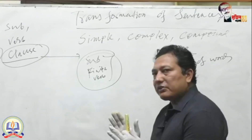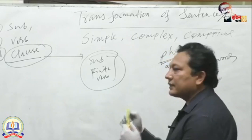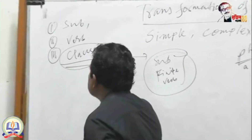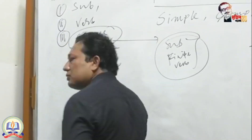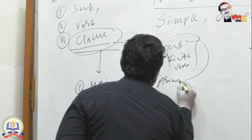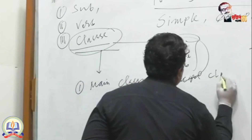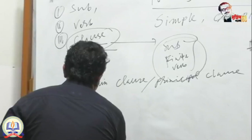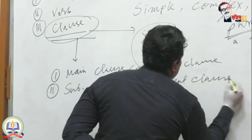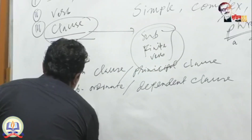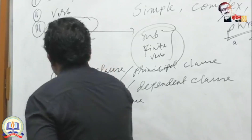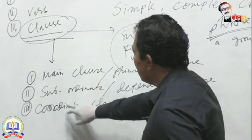A clause is used as a part of a sentence, but it itself has the characteristics of a sentence and is connected within a sentence. There are three types of clauses: number one, main clause or principal clause; number two, subordinate or dependent clause; number three, coordinate clause. These three types of clauses appear in simple, complex, and compound sentences.